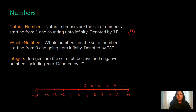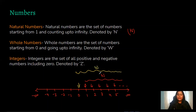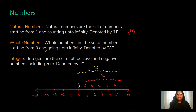Earlier we saw that natural numbers were one, two, three, four — only those positions, not any numbers in between. Now if we include zero in this set, the set becomes zero, one, two, three, four, five till infinity — these are whole numbers. Whole numbers are denoted by W. The only difference between natural numbers and whole numbers is that whole numbers include zero.